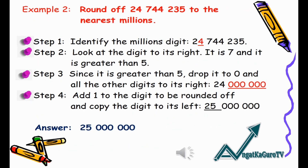Example 2: Round off 24,744,235 to the nearest millions. Step 1: Identify the millions digit — in this example, it's 4.